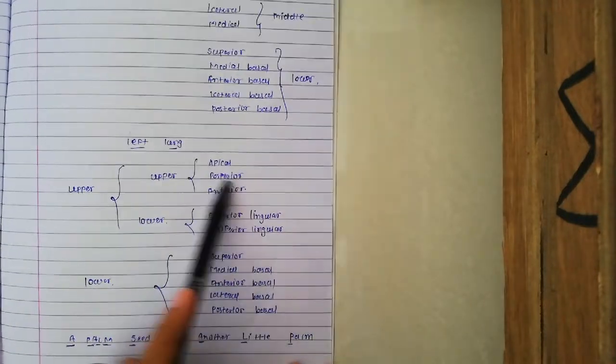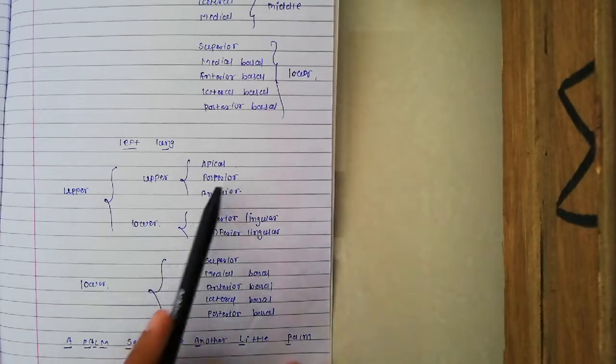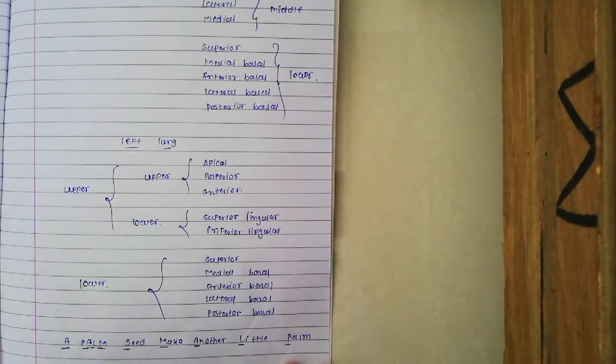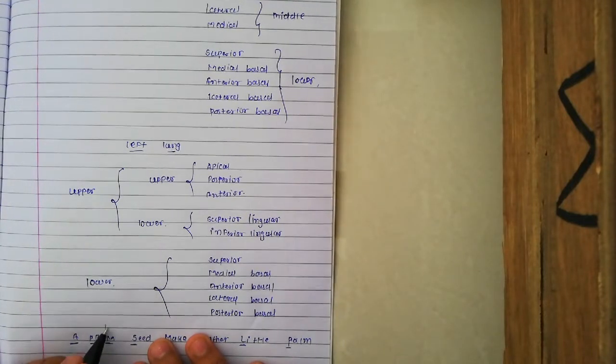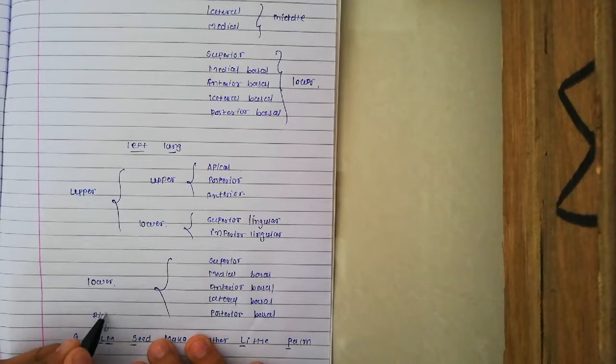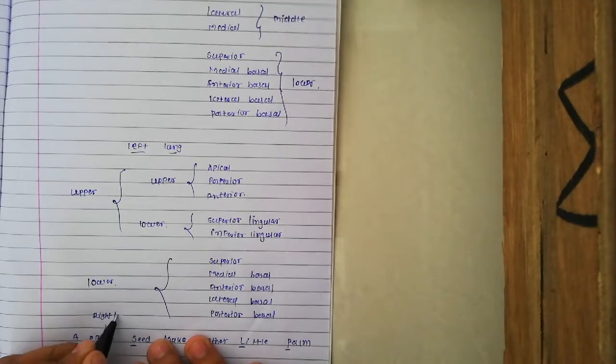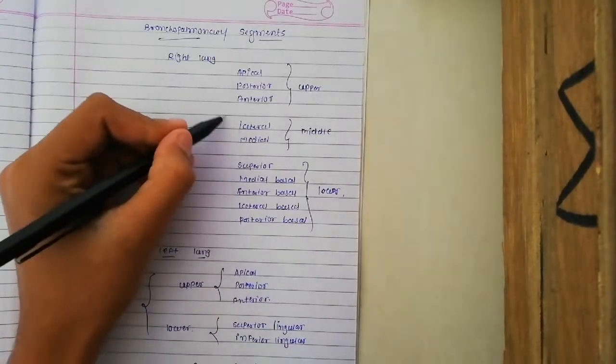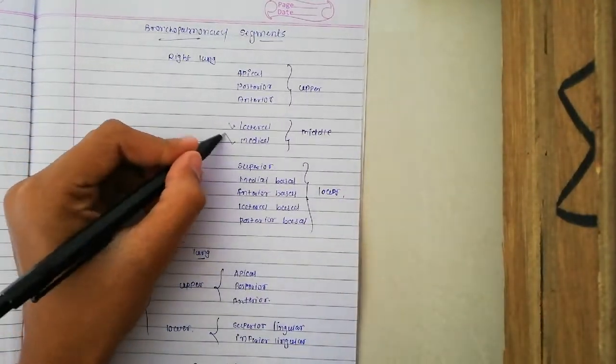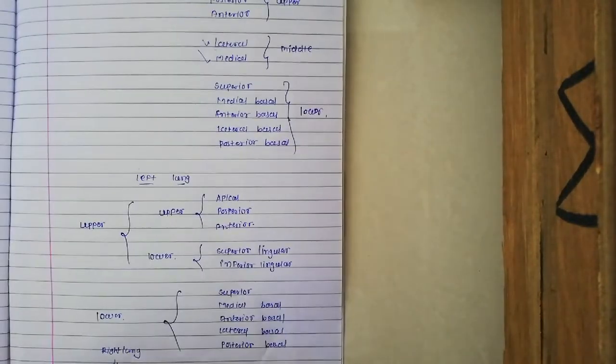P for posterior, A for anterior. L and M are for the right lung specifically: L means lateral, M means medial. Then S for superior.